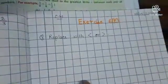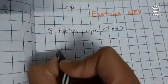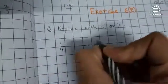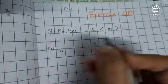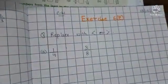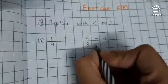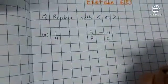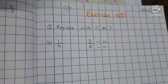Now note down this question: 1 upon 4 and 3 upon 8. This is the numerator and this is the denominator. The denominators are not the same and the numerators are not the same.